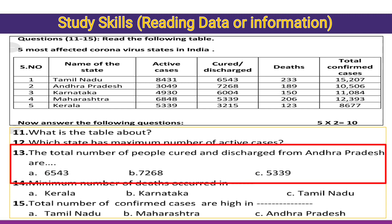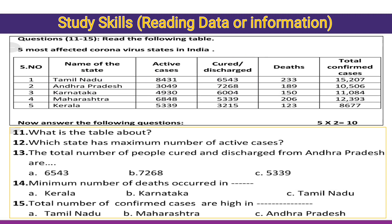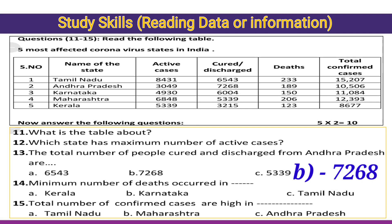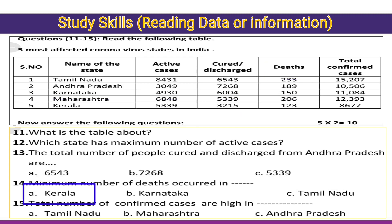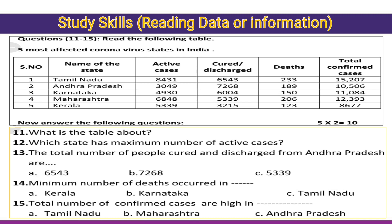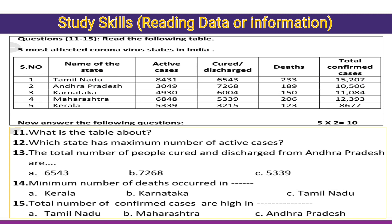Thirteenth question: the total number of people cured and discharged from Andhra Pradesh. Check the cured and discharged column for Andhra Pradesh — 7268, option B. It is better to write both the option and the answer for MCQs to be in a safe zone, so write option B: 7268. Fourteenth question: minimum number of deaths — minimum means least — the answer is Kerala, option A. Fifteenth question: the total number of confirmed cases are highest in — 15207 is Tamil Nadu, option A is absolutely right.